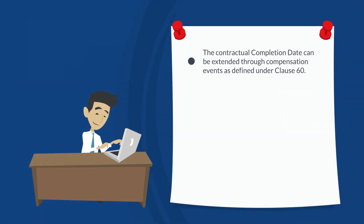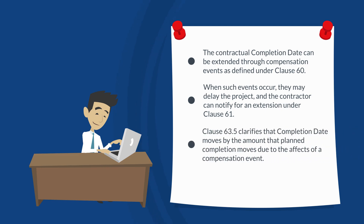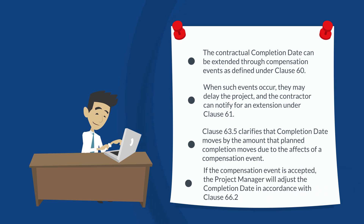The contractual completion date can be extended through compensation events, as defined under Clause 60. When such events occur, they may delay the project and the contractor can notify for an extension under Clause 61. Clause 63.5 clarifies that the completion date moves by the amount the planned completion moves due to the effects of a compensation event. If the compensation event is accepted, the project manager will adjust the completion date in accordance with Clause 66.2.